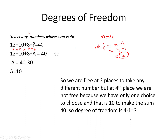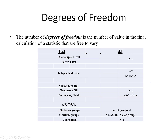Where will we use degree of freedom? We use it in inferential statistics. For a one-sample t-test, as discussed in earlier lectures, we use df equals N minus 1, because we have one sample. For an independent t-test, there are two types of data and two samples, so for each sample we need N1 minus 1 plus N2 minus 1, which can be written as N1 plus N2 minus 2.